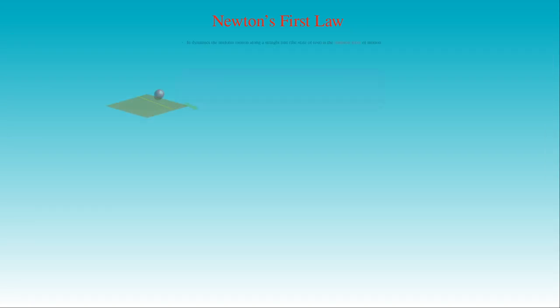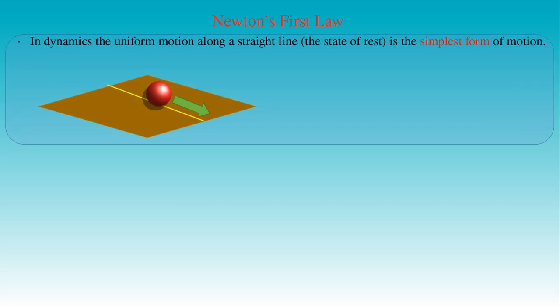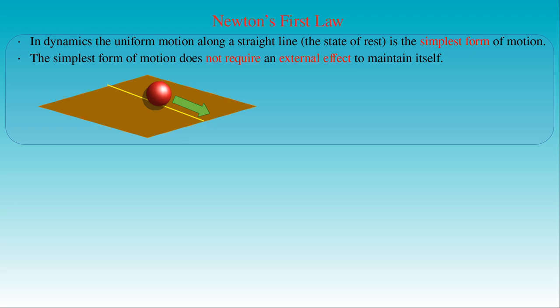Let us see what the consequences of the first law of motion are. The uniform motion along a straight line — or rectilinear uniform motion — is the simplest form of motion, not only in kinematics but also in dynamics. This is the form of motion where the velocity of the body is constant, which does not need external effects due to other bodies to maintain itself. The state of rest can be considered as a special case where the speed of the body is zero.